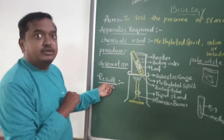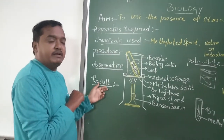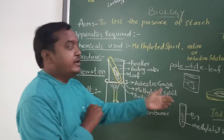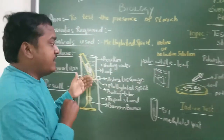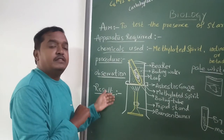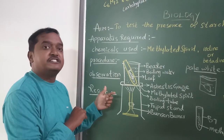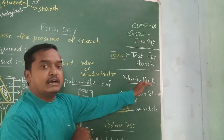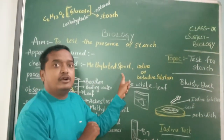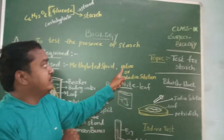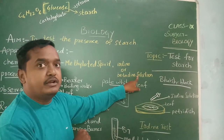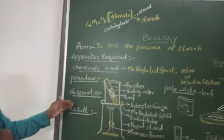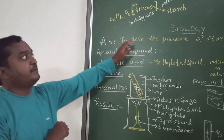Result: With the above activity, starch is tested in the leaf using the iodine test. We can confirm that even after removing the chlorophyll, starch is present in the leaf, as confirmed by the color change to bluish-black. The main work of methylated spirit is to remove the chlorophyll; the main work of iodine or betadine solution is to test the starch in the leaf. This is the activity to test the presence of starch. Thank you.